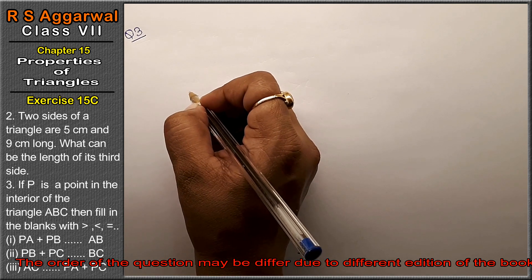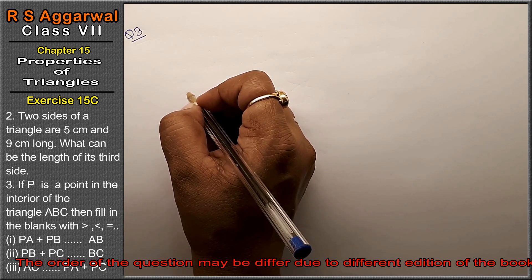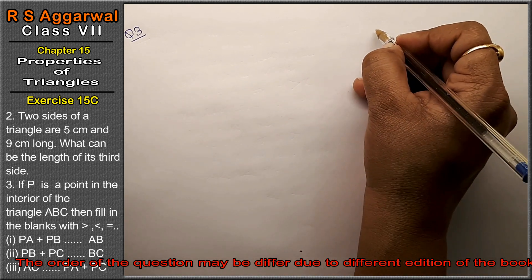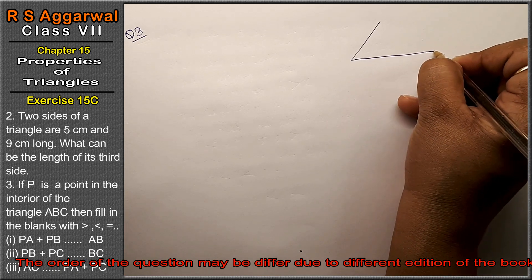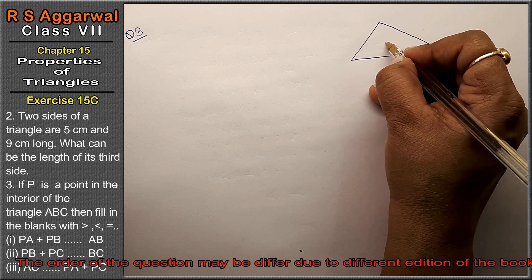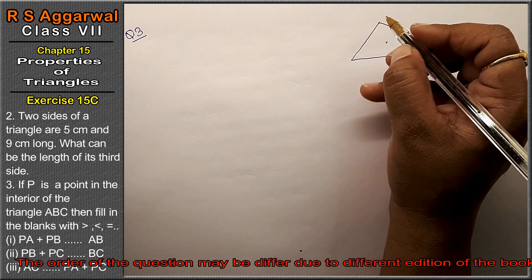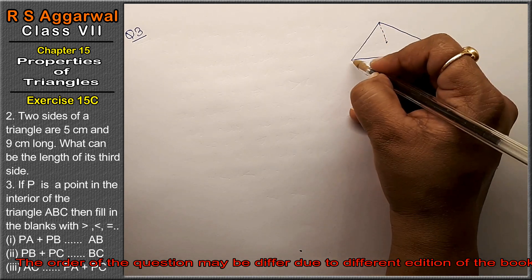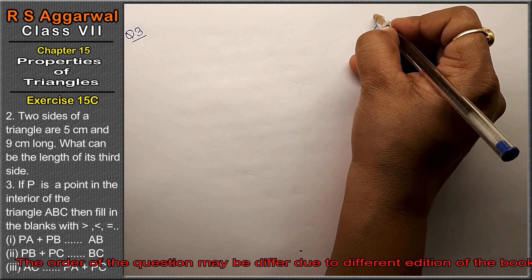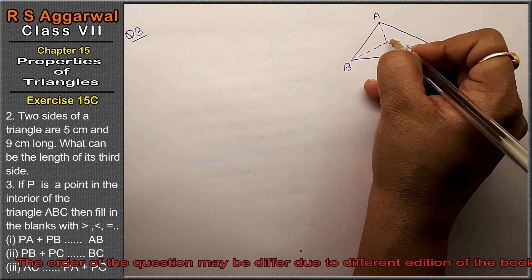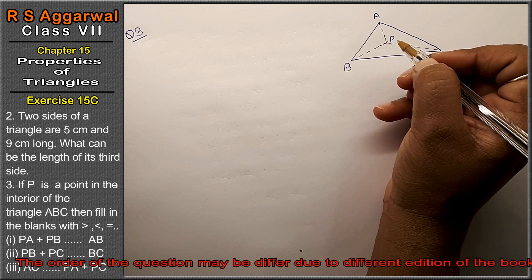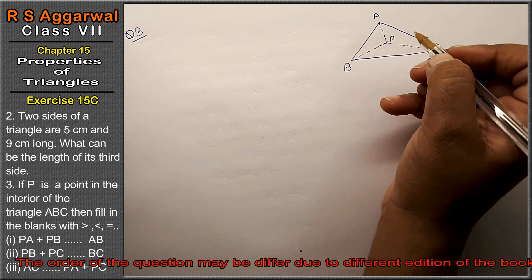Question 3 is: If P is a point in the interior of triangle ABC, draw the figure with point P in the interior and join PA, PB, and PC. Then fill in the blanks with less than, greater than, or equal to.